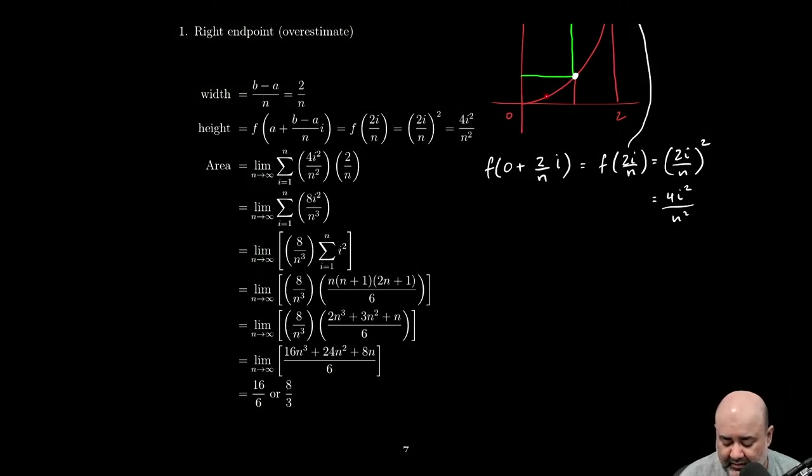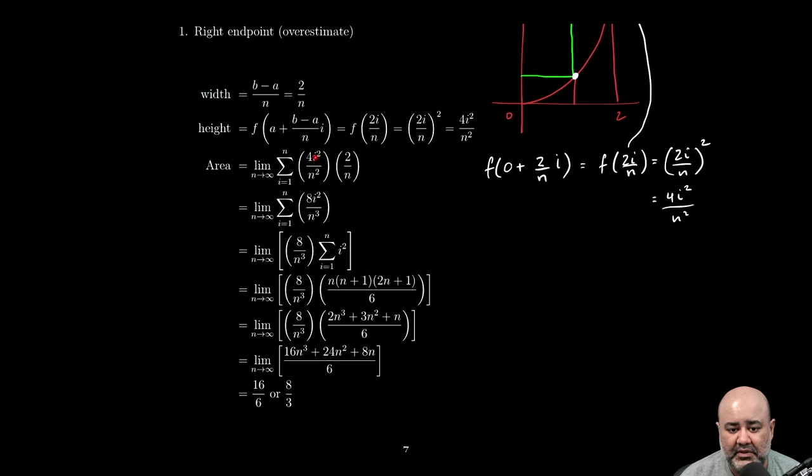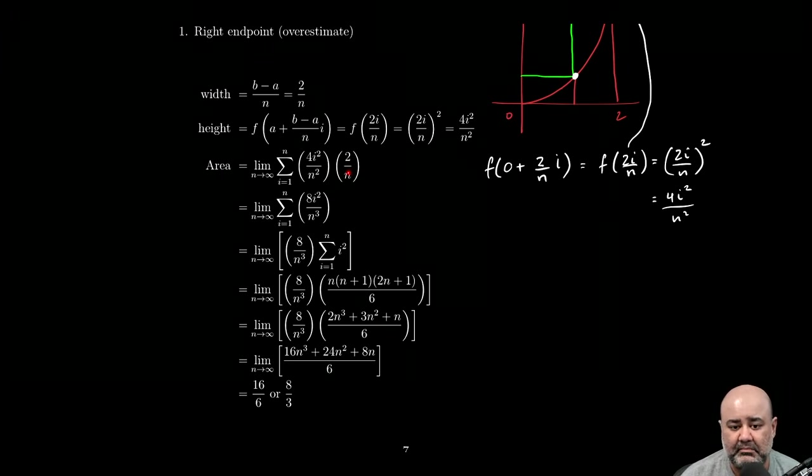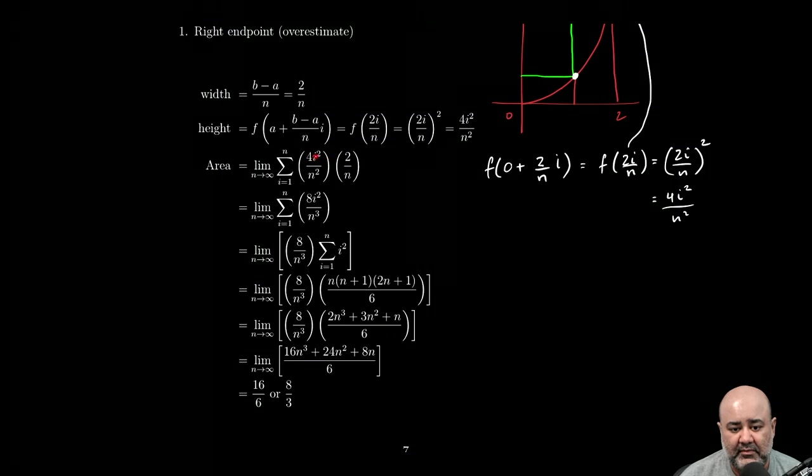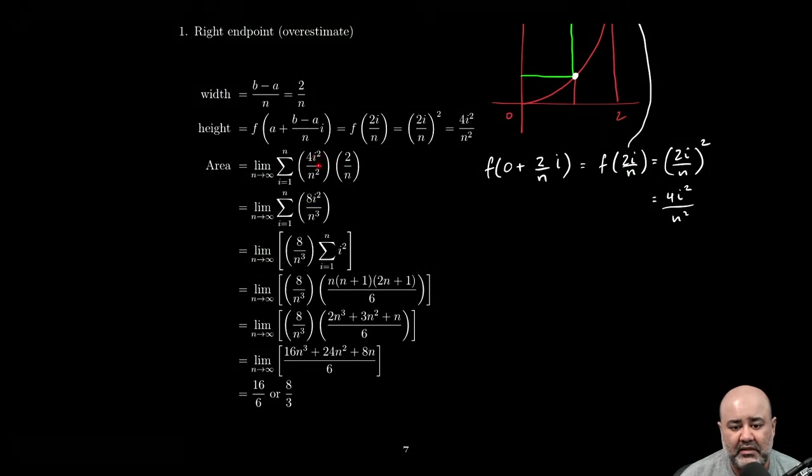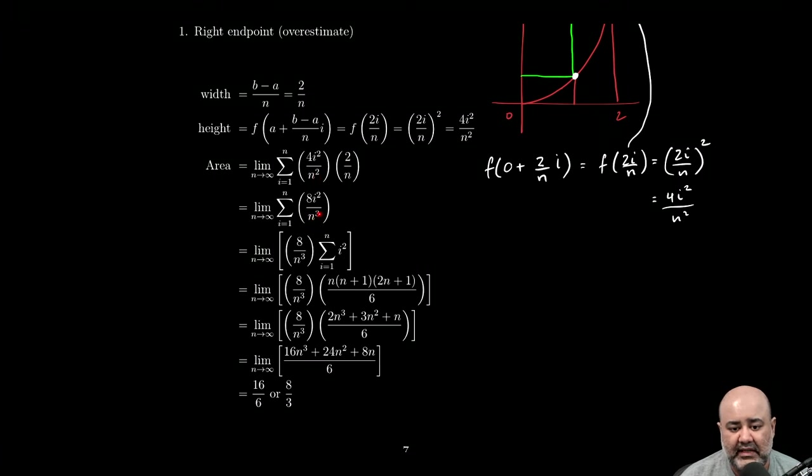However, the height of the function will change based on the counter. The height of the function here is different from the height of the function there, which is different from the height of the function there, and so on. So the height of the function or the rectangle is going to depend on our counter in some way. The width of the function or the width of the rectangle doesn't care on where you are. It's always the same. So here we can combine these two fractions by multiplying them. Four times two will give us eight. I squared doesn't have a counterpart, so it stays. N squared times N yields N cubed.